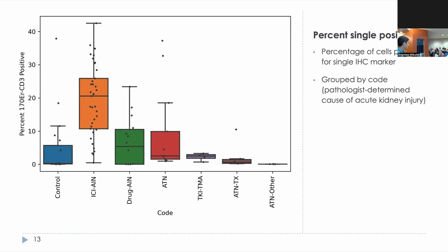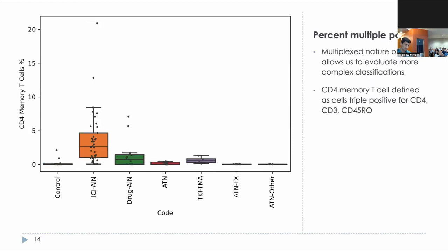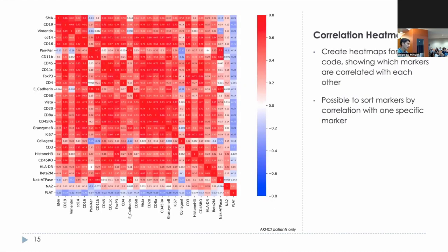Many immune cell types are typically defined as positive by more than one marker. As each cell in our dataset contains a list of markers it's positive for from our multiplexed panel, we can query cell types in an a priori manner. Here we measure the percentage of CD4 memory T cells, defined as those that are triple positive for CD3, CD4, and CD45RO. As we have 27 markers present in our dataset, we can perform a high-throughput analysis measuring the correlation of marker densities to one another. This heatmap can identify redundant and autocorrelated markers, helping refine an IMC panel to capture greater heterogeneity.